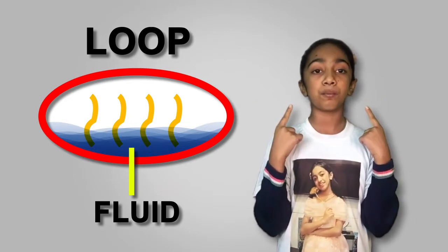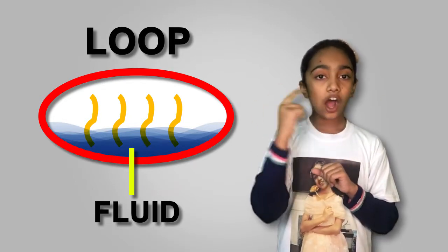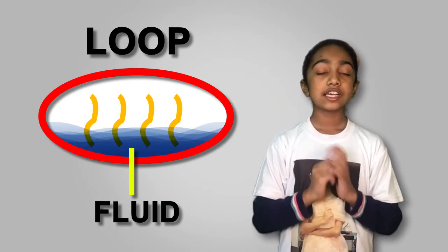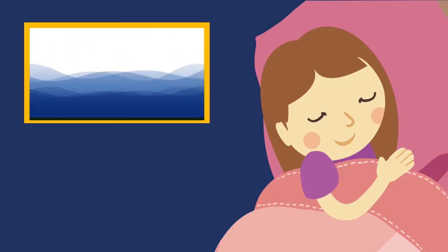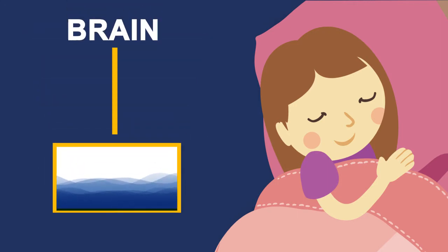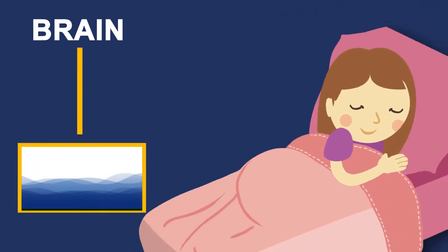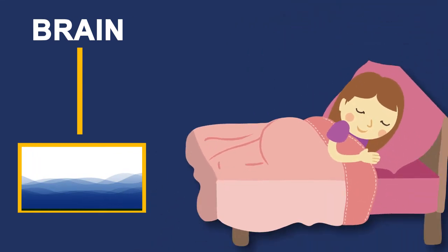It sends signals to your brain telling it how your head is facing. For example, if you are sleeping right now, then the fluid moves as per your head and then the hairs beneath it move and the hair sends signals to your brain that hey, you are facing like this. Let's have another example.